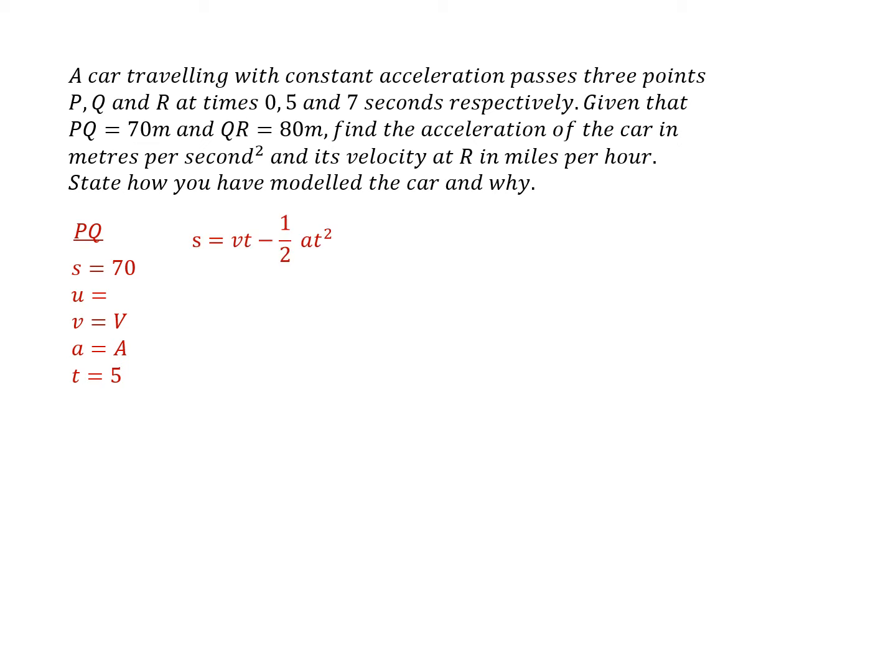And that's this one: s equals vt minus a half at squared. So putting these things into that formula gives that there. Now I need to look at the second part of the journey between Q and R.